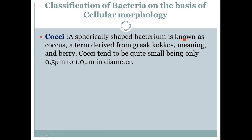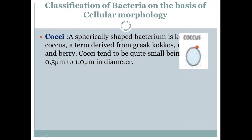A spherical shaped bacterium is known as coccus — spherical, round like a ball. The term is derived from the Greek word 'kokkos', which means berry — and berries, as you know, are round. Cocci tend to be quite small, being only 0.5 micrometer to 1.0 micrometer in diameter. You can see them here — completely round like a ball.